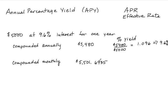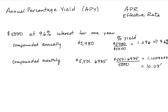However, by compounding monthly I got a higher amount. The percent yield is $5,501.6935 ÷ $5,000 = 1.100339, which means the yield is actually 10.03387%. Due to compounding, the stated or nominal rate of 9.6% acts like 10.03%. This is the effective rate of interest, also called the annual percentage yield (APY) or annual percentage rate (APR).